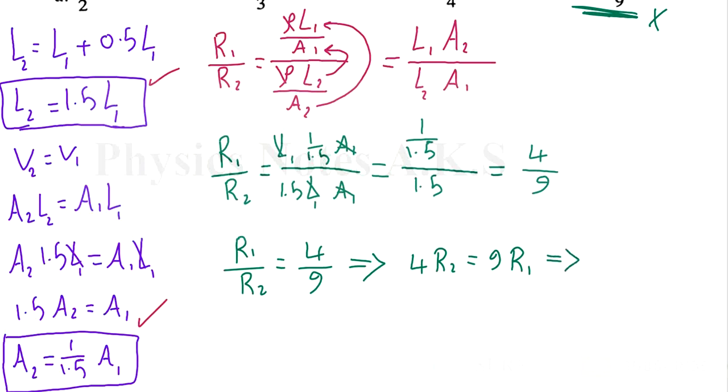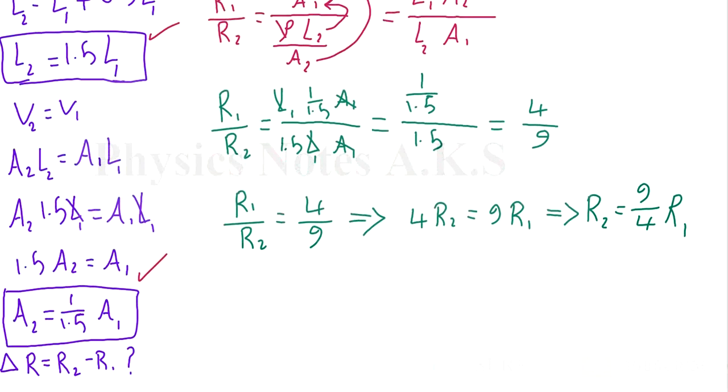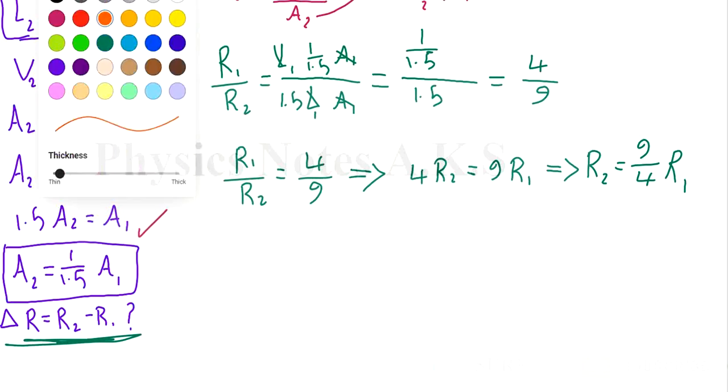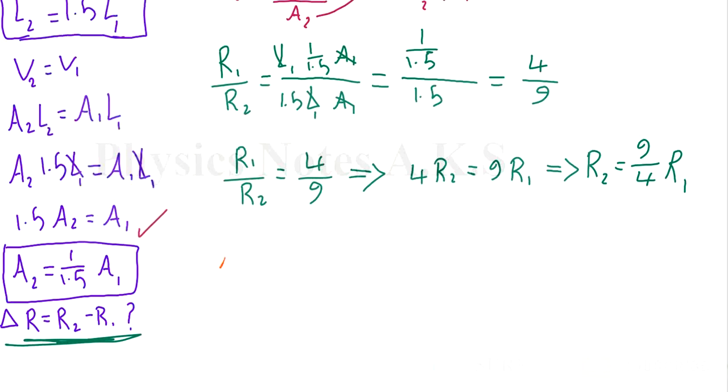Now we find the difference. Let me change the color again. So delta R equals R2 minus R1, which equals 9 over 4 R1 minus R1. I hope you know how to do this from math. Of course, I can factorize: I can put R1 outside the bracket, and here is going to be 9 over 4 minus 1.